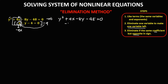Distributing negative 4: negative 4 times x gives negative 4x. Negative 4 times negative y gives positive 4y. And negative 4 times negative 4 gives positive 16, then equals 0.